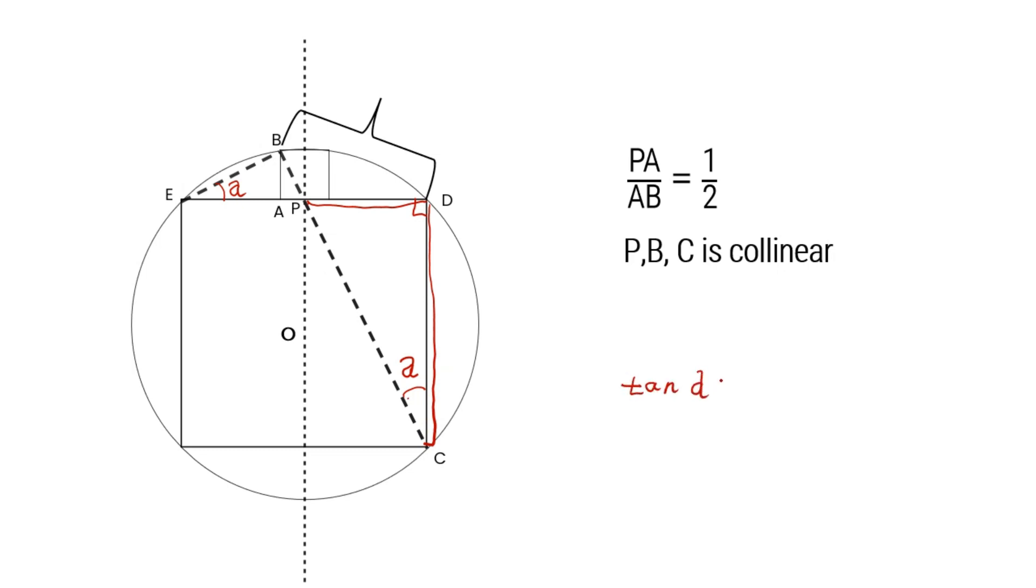Tangent alpha is equal to 1 half. So we can get AB over AE equals 1 half.